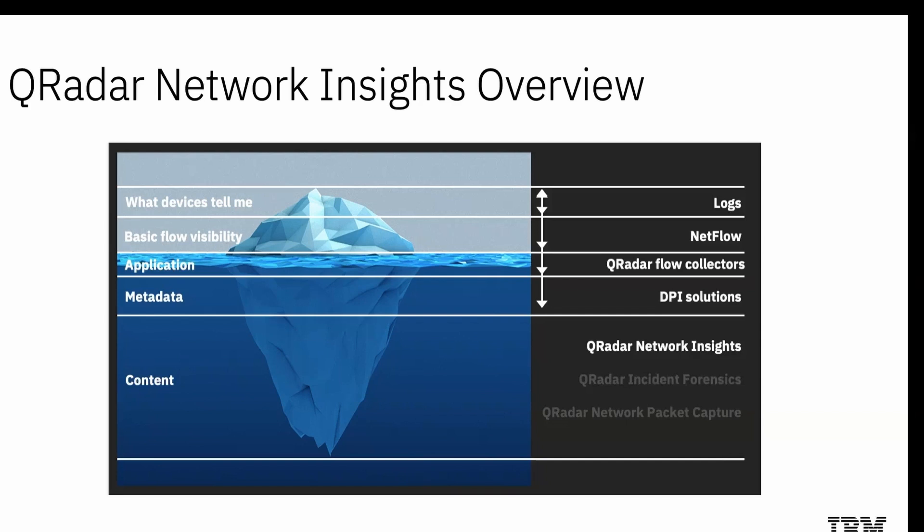With flows, you can see the source and destination of the session, the applications that are used, and the files that are transferred. When you collect raw network traffic, you see the actual messages that were sent and received by the devices. These flows represent the truth of what happened in your network. Unlike events, they are not just a snapshot of a particular moment in time. Flows have a lifespan and contain the original messages that devices send to each other, which is useful when you figure out what happened in a security incident.